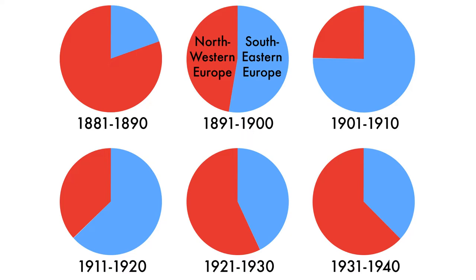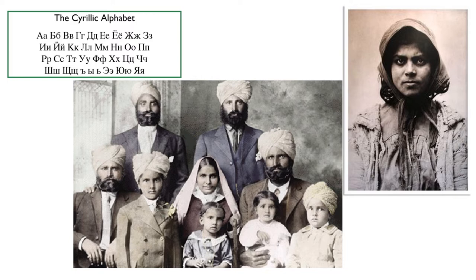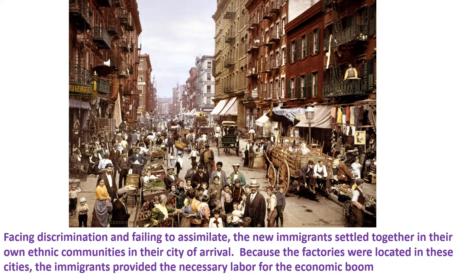These eastern and southern Europeans had different religions — things like Greek Orthodox or Muslim — and a completely different culture. They not only looked different but had a different culture, for example the Cyrillic alphabet. These people arrived and looked different, had different cultures, so not surprisingly they hung together. The only opportunities were in factories in big cities, and they faced a lot of discrimination, which hurt their ability to assimilate. The end result was these new immigrants settled together in their own ethnic communities in their city of arrival — mainly New York — because that's where the factories were. The immigrants provided the necessary labor for the economic boom.